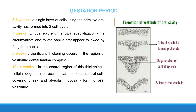Gestation period. On the 5th to 6th week, a single layer of cells lining the primitive oral cavity has formed into two cell layers. On the 7th week, the lingual epithelium shows specialization — that is, formation of circumvallate and foliate papillae first, and then formation of fungiform papillae.